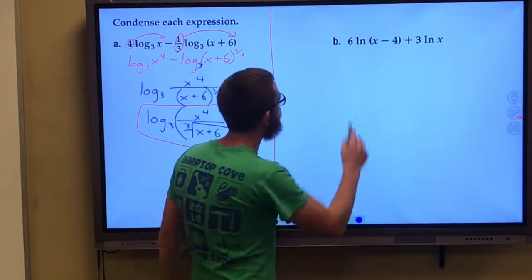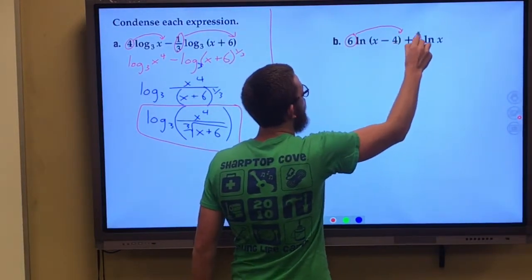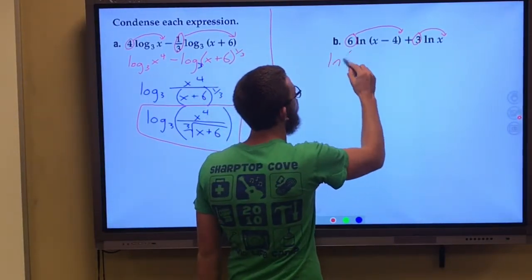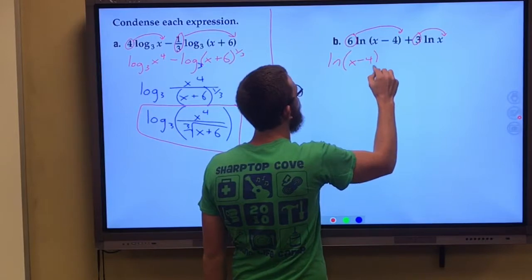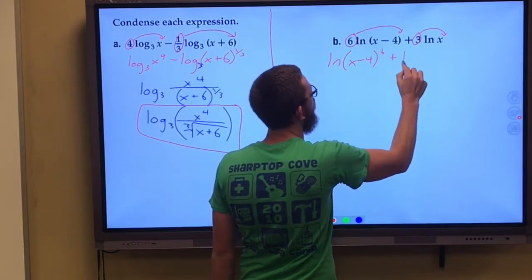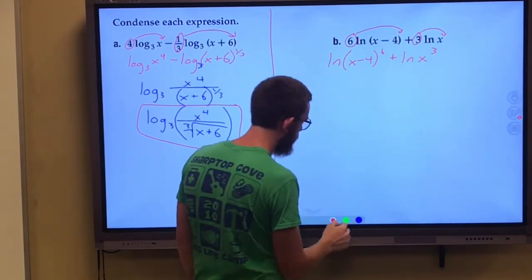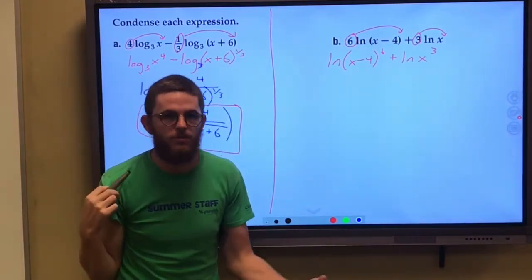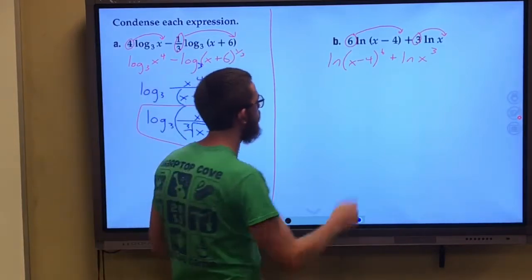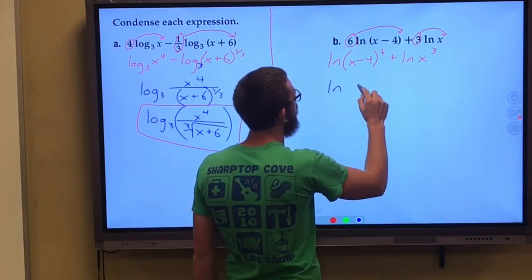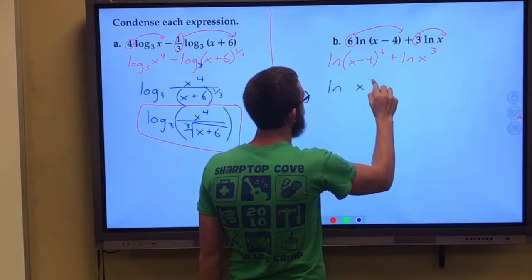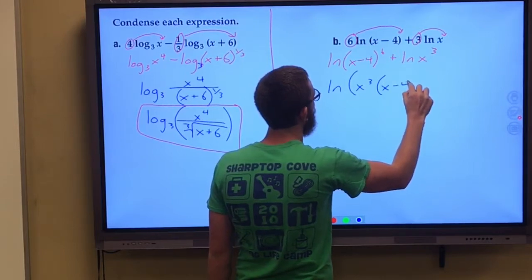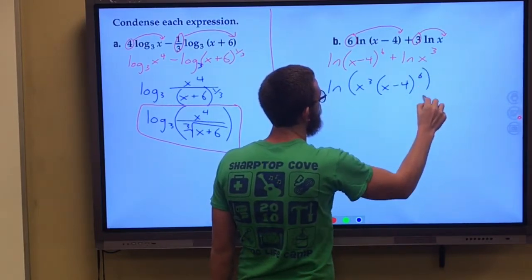Over here, very similar, I am going to use that power rule first. So this is natural log of x minus 4 raised to the 6th power plus natural log of x raised to the 3rd power. And now since I am adding them this time, this is screaming at me to use the product property. This is natural log of x to the 3rd times x minus 4 to the 6th power.